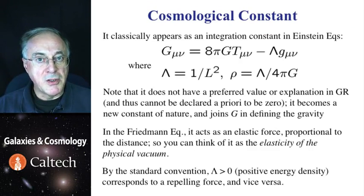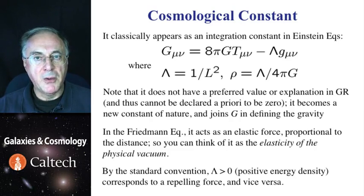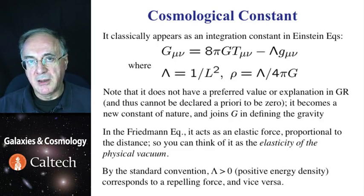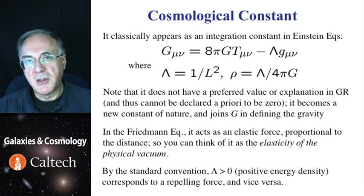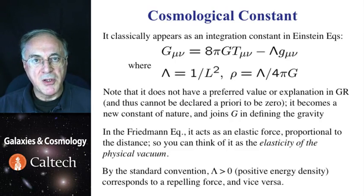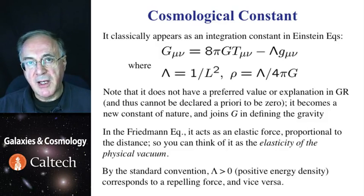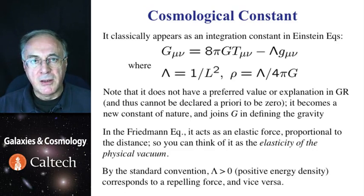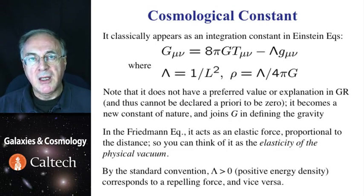Again to remind you, the classical origin of the cosmological constant was essentially as an integration constant in Einstein equations. It simply comes out of general theory of relativity, but the theory does not specify its value. You could think of that as a new constant of nature, whose value is something that we should probably determine observationally. Since energy density implied by cosmological constant is constant in time, it corresponds roughly to the force that is proportional to the distance. You can think of it as the elasticity of the physical vacuum. The sign convention is such that positive value of cosmological constant, which contributes to the positive mass energy density, is repulsive force.